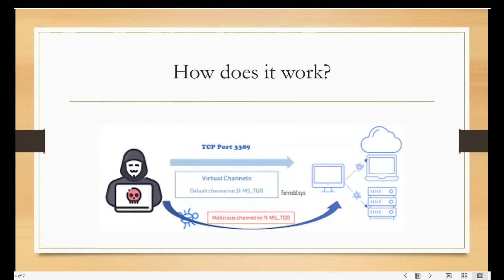The BlueKeep vulnerability allows threat actors to send specifically crafted packets to Windows operating systems that have RDP enabled. After successfully sending a packet, the threat actor will have the ability to perform a number of actions: adding accounts with full user rights, viewing, changing, and deleting data, and installing applications on that particular Windows system.